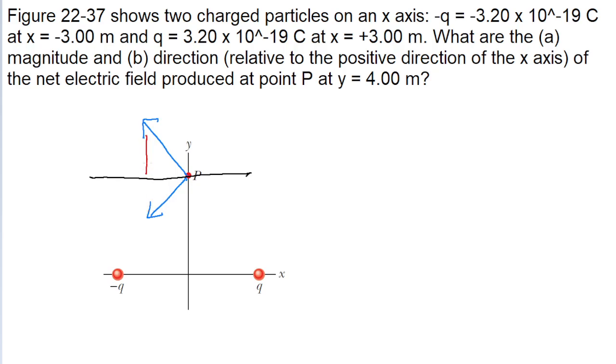So those vertical components are going to cancel out. So all that's left are the horizontal components. The horizontal component of the positive charge is pointing to the left, and the horizontal component from the negative charge is pointing to the left. So these horizontal components are going to magnify each other.